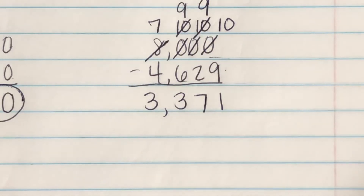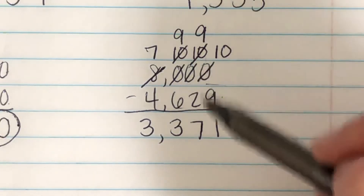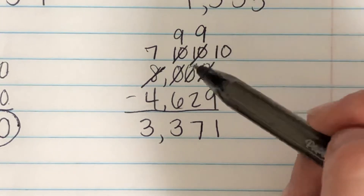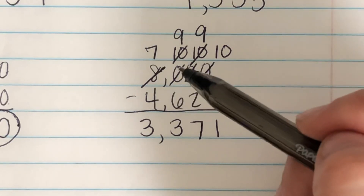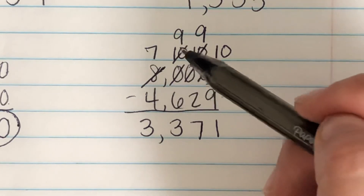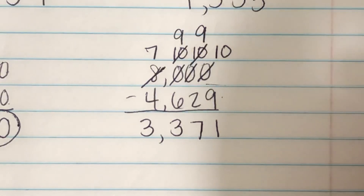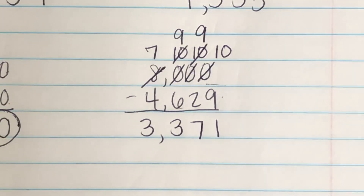Subtracting can get very tricky very quickly if you do not go slow, if you do not show your work, if you do not line up your numbers correctly, and if you do not mark out those numbers as you borrow and regroup. As you're borrowing those numbers, make sure you're marking them out. That is how you do four-digit subtraction across zeros. Good luck on your work today, and let me know if you have any questions.